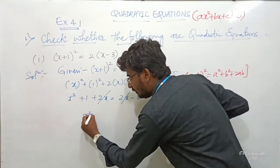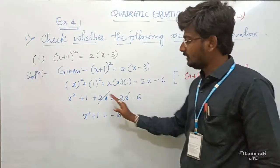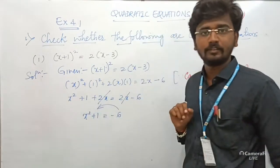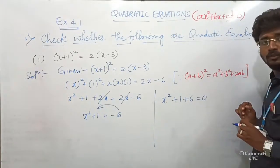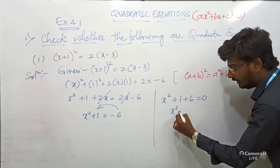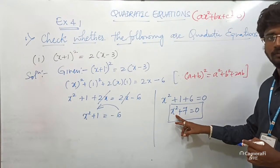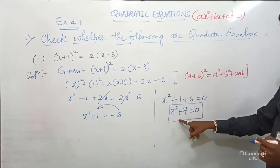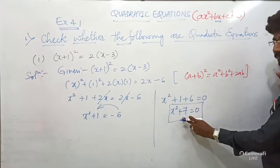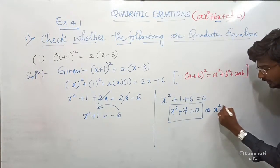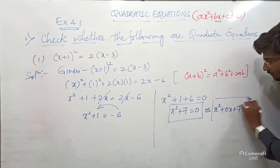What is remaining? X² + 1 = −6. Taking −6 to the LHS, it becomes +6: X² + 1 + 6 = 0, so X² + 7 = 0. Since there is an X² term, it is in the form of a quadratic equation. If you want the standard form, the BX term is missing, so you can write X² + 0X + 7 = 0.